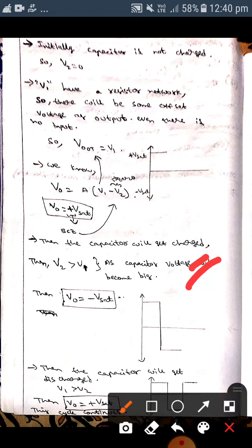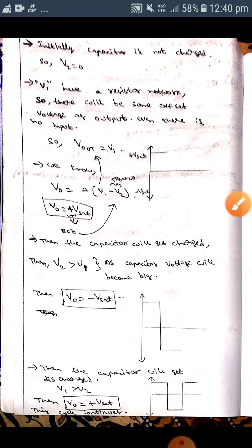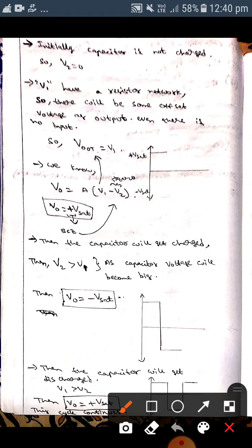after this, the capacitor will be charged. Then V2 will become greater than V1. Then if V2 is greater than V1, this value will be negative, which means V0 will be negative, which means V0 will be minus Vsat. Then the waveform will go to negative here like this, as I told you, as shown here.